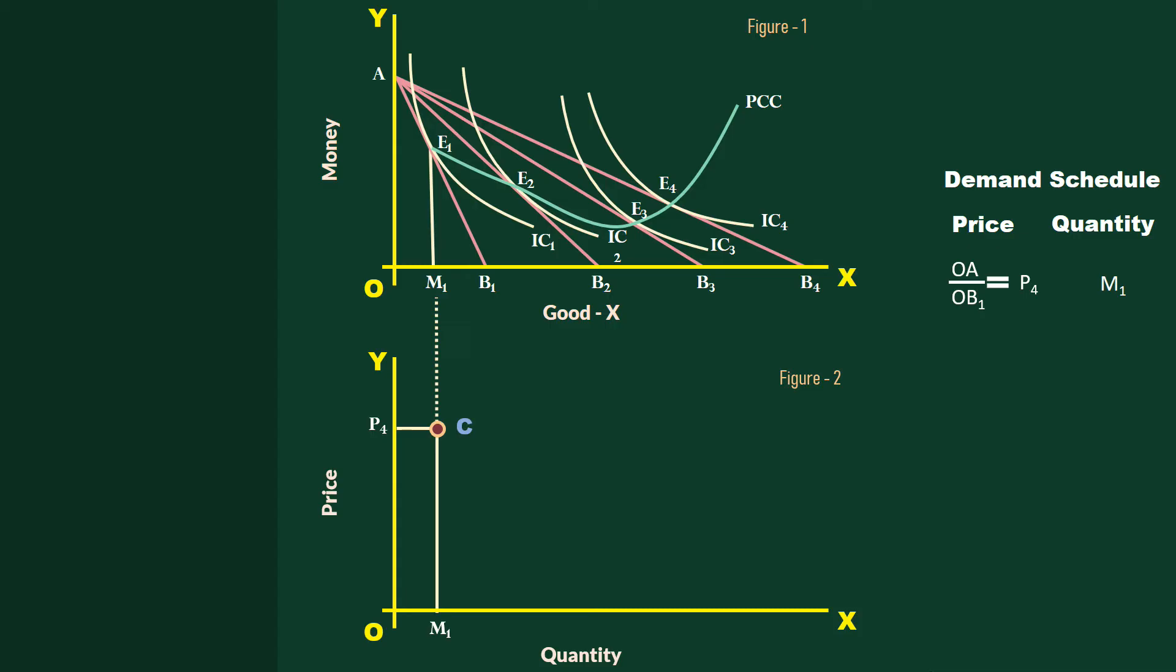When the consumer is in equilibrium at point E2, he buys M2 units of Good X. The price is OA divided by OB2, P3. Plot point M2, P3 in Figure 2. Point F represents this point.